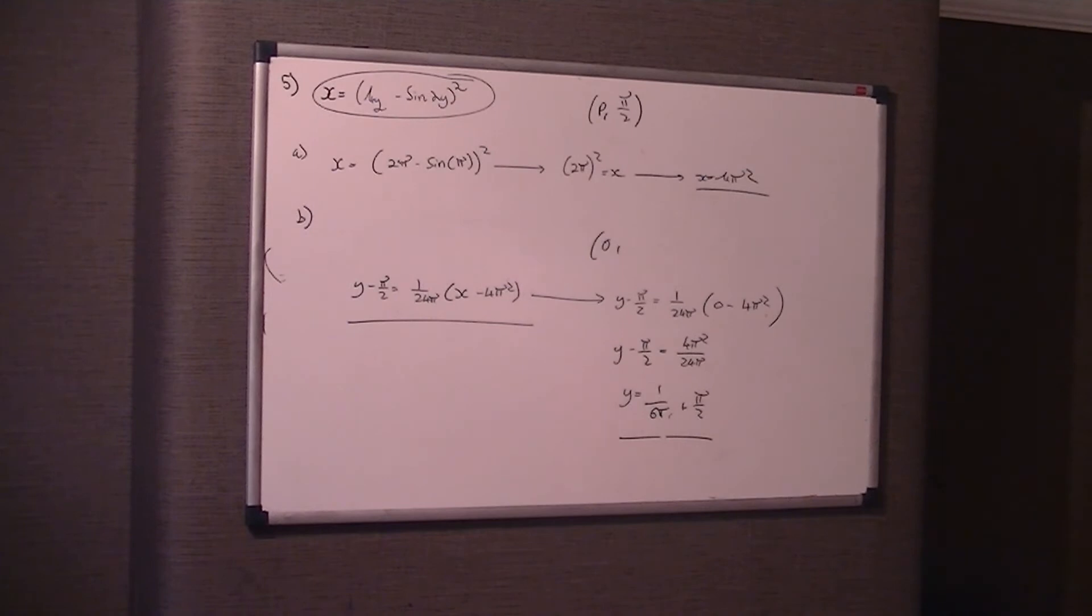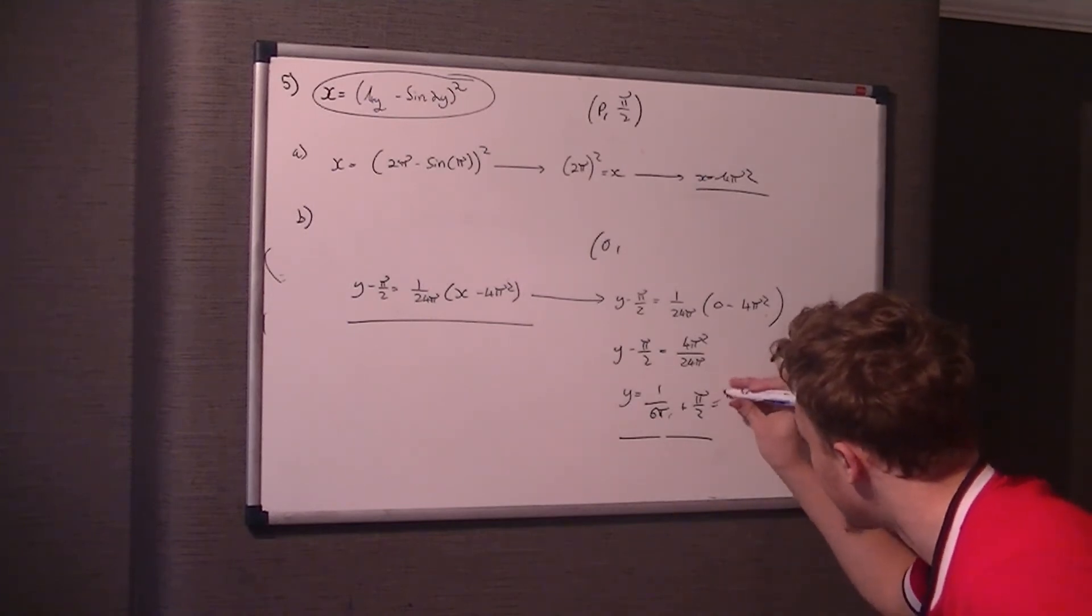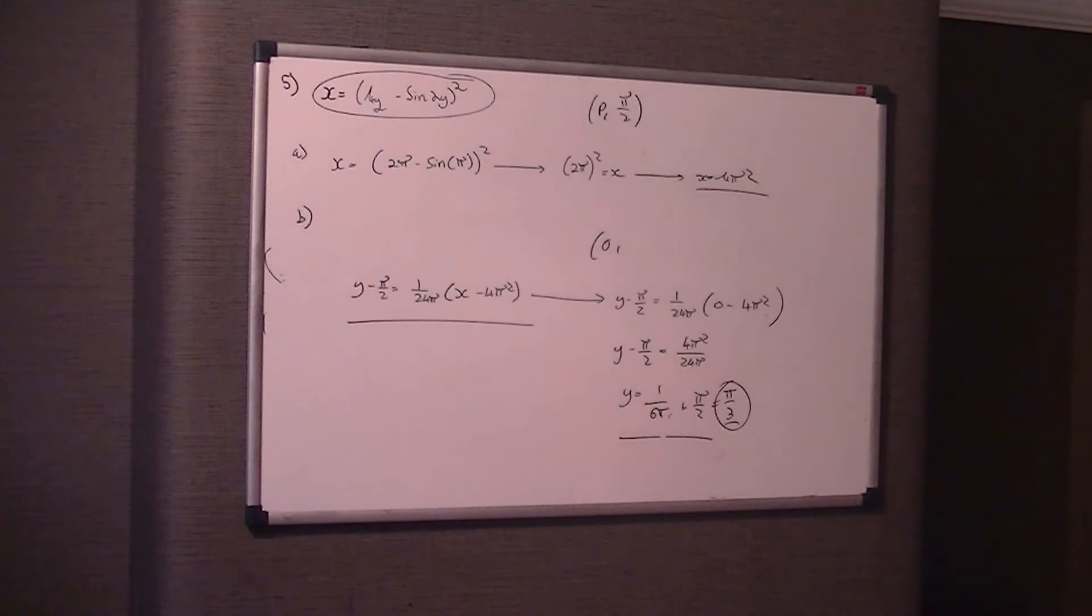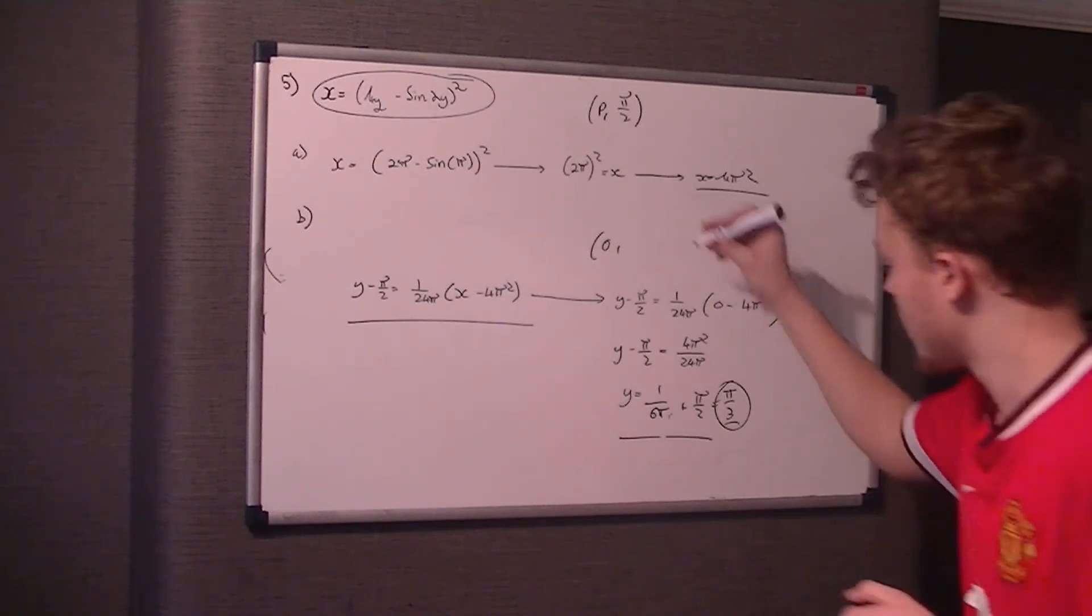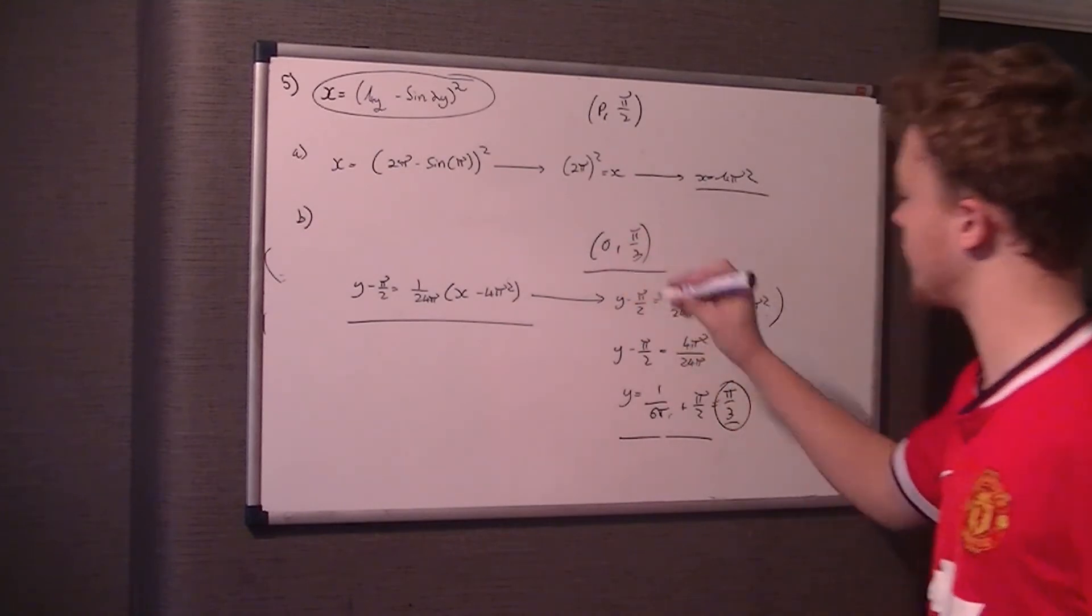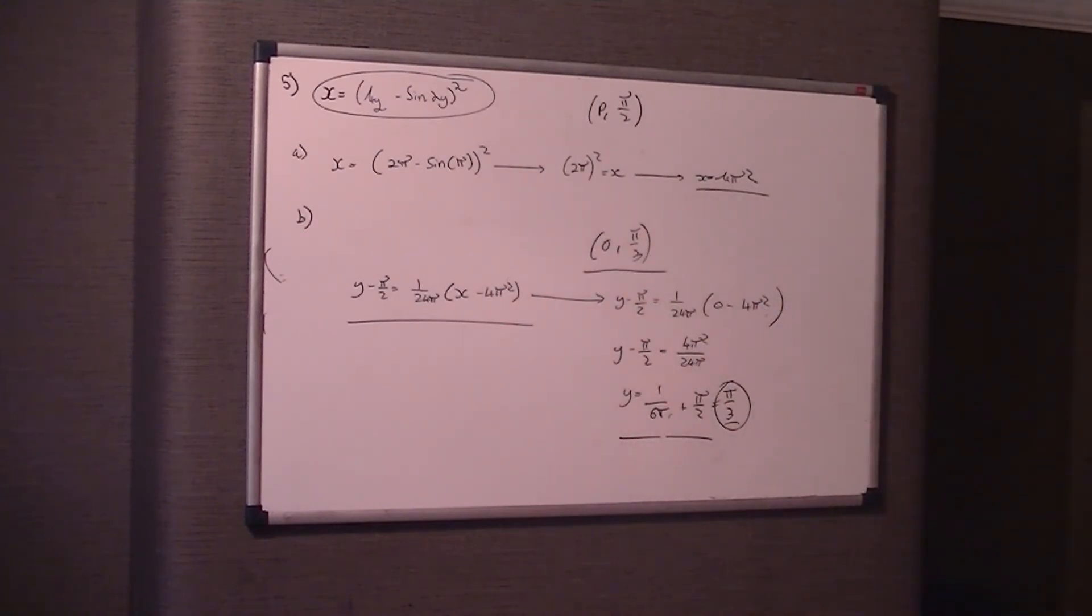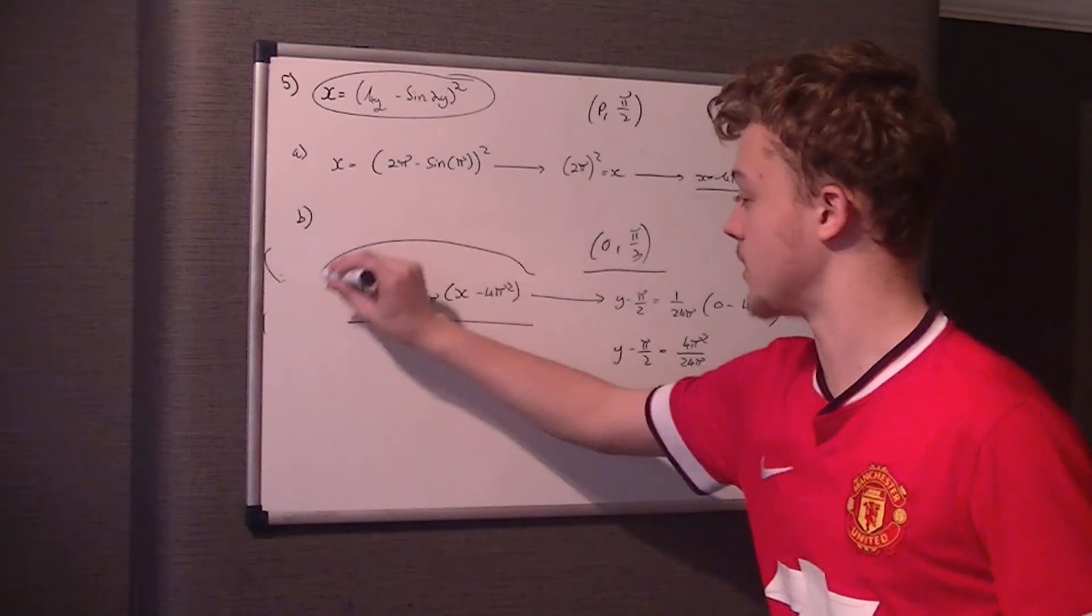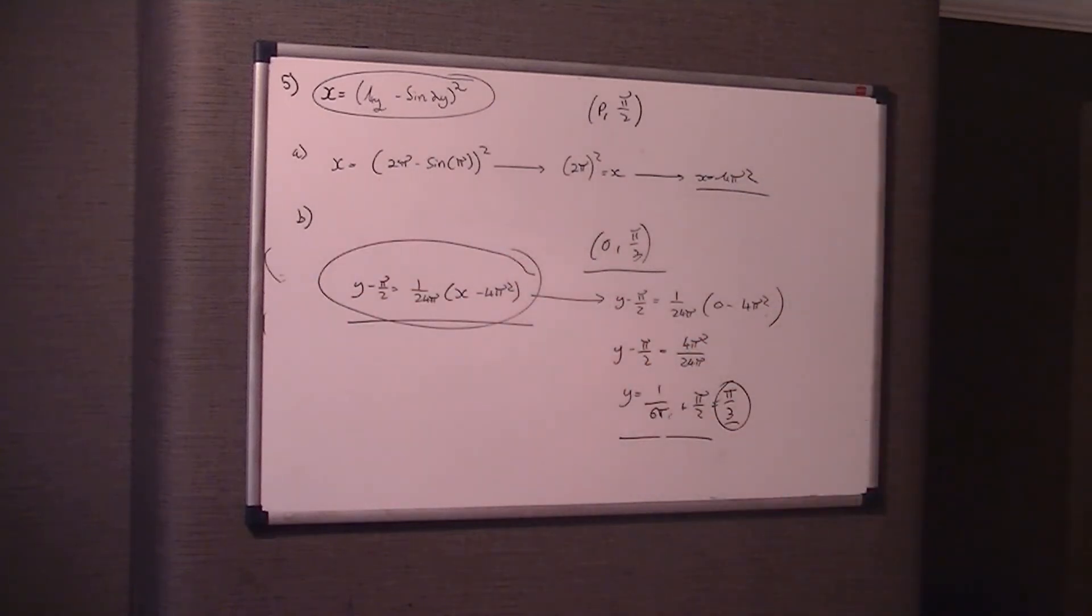So therefore, we simplify that down we get pi on three as a y-coordinate. So we know x is zero, so it's zero pi on three is coordinates of A. So you see how it was actually required to work this out. Well, for a question five, you probably just expect you to get that.